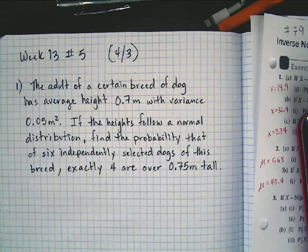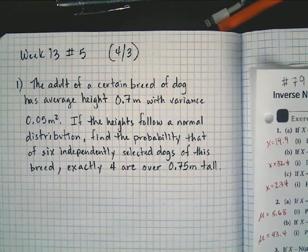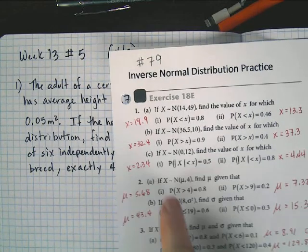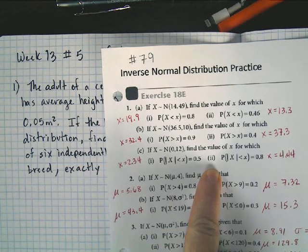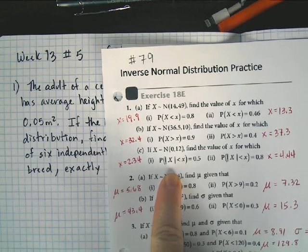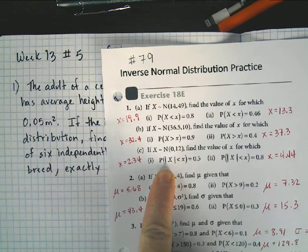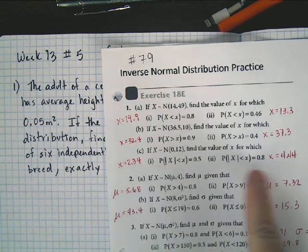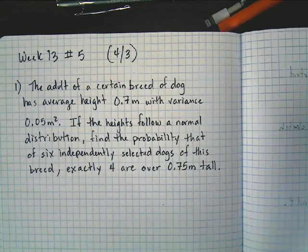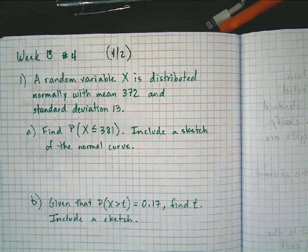I also want to go over yesterday's warm-up. During our Google Hangout meeting yesterday, a question came up from this assignment, number 79, how to do problems CI and CII. So I want to go over how to do those problems. It was really tough for us to try and figure it out. I didn't know how to do it, and so we figured it out together. We got the answer, but we didn't quite understand why. So I did a little more research and now I think I'm better able to explain it. So back to yesterday's warm-up. A random variable X is distributed normally with mean 372 and standard deviation 13.